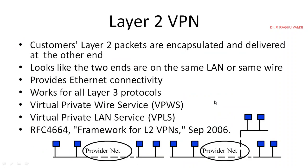When the virtual private network secure channel is established at Layer 2 — the data link layer in the ISO OSI protocol stack — it is called a Layer 2 VPN. If the secure channel is established at the network layer, it is called a Layer 3 virtual private network. In Layer 2 VPN, customer Layer 2 packets are encapsulated and delivered at the other end — it looks like the two endpoints are on the same LAN and on the same wire, giving a virtual feeling.